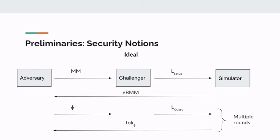In the ideal experiment's setup phase, the adversary sends the multi-map to the challenger, who sends the setup leakage to the simulator. The simulator generates the encrypted boolean multi-map from the setup leakage and sends it back to the adversary. In the query phase, the adversary adaptively sends boolean formulae to the challenger, who sends the query leakage to the simulator, which generates the token. We say that the encrypted boolean multi-map is adaptively secure with respect to the setup and query leakages if the real and ideal experiments are indistinguishable to the adversary.